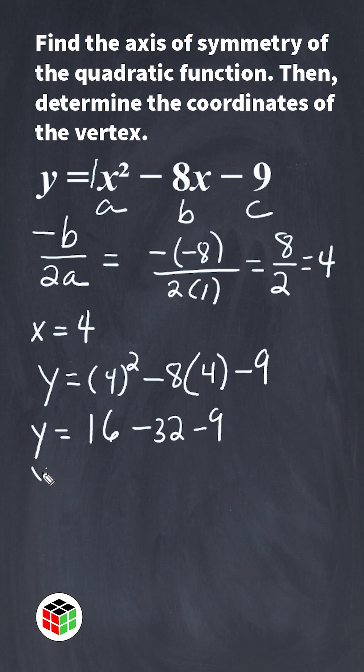That can be simplified to y equals 16 minus 41, which is equal to negative 25. So the coordinates of our function's vertex would be located at 4, negative 25.